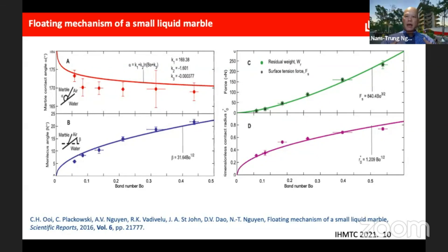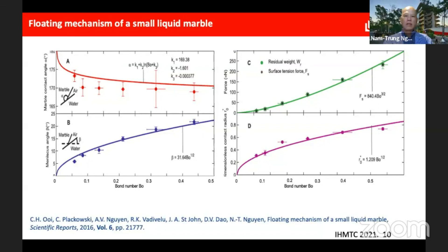Contact angles and meniscus angles representing the deformations of both the liquid marble and the free surface are both functions of Bond number. If the free surface is deformed, it forms a surface tension force pushing up the liquid marbles. So the larger the Bond number, the larger the surface tension force. This means the liquid marble is supported not only by buoyancy from displaced volume but also by the surface tension of the free surface.